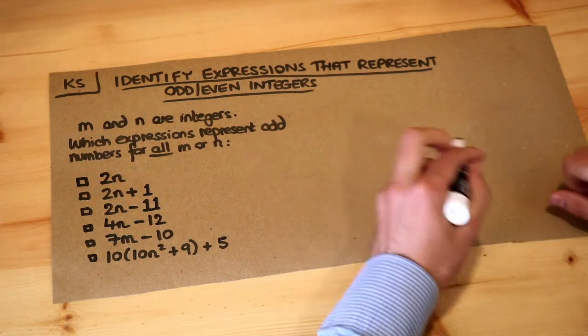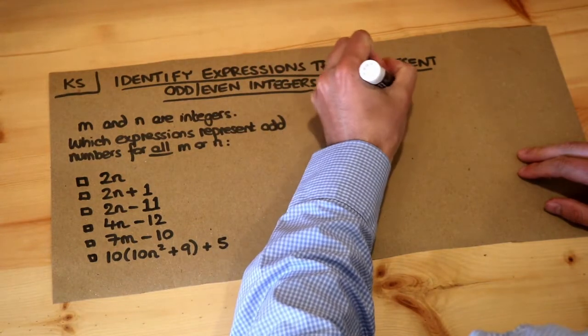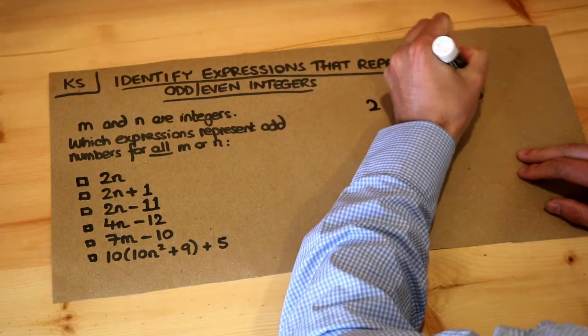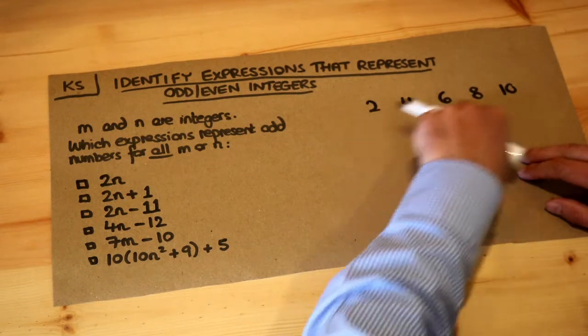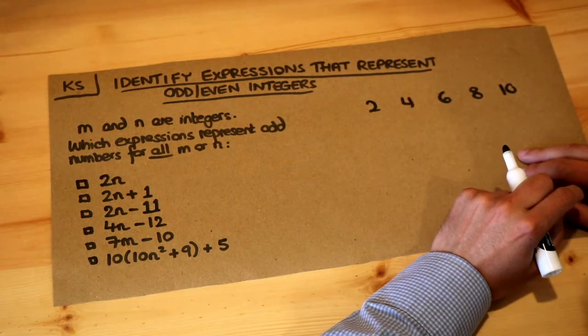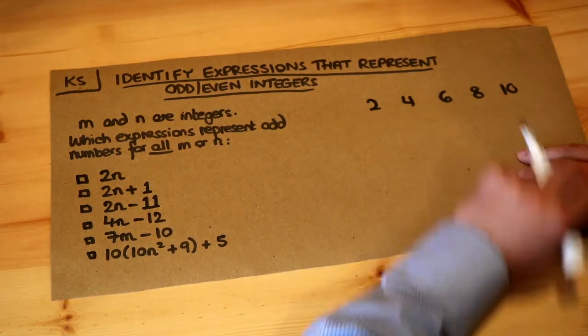Now let's look at some even integers. Let's say we had 2, 4, 6, 8, 10. What property do all these even integers share? Well, they're all 2 times something.